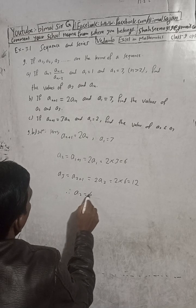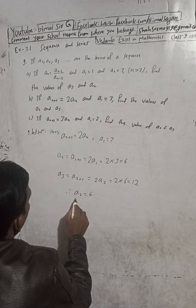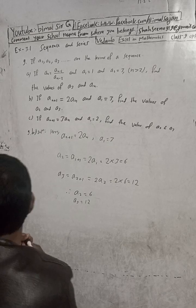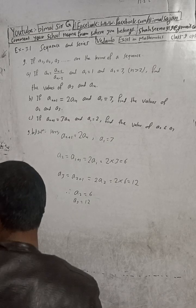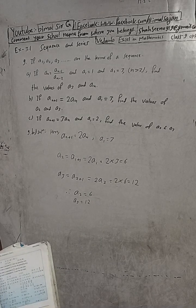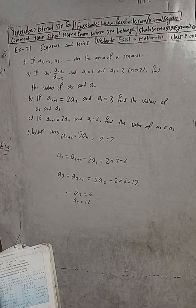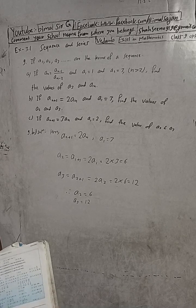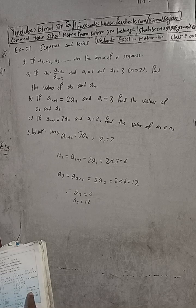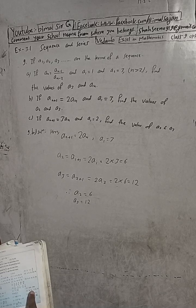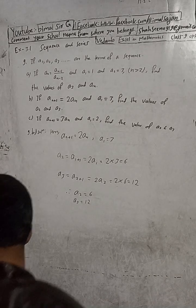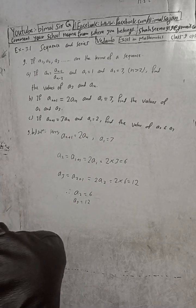So our answer for part B is: a2 is equal to 6 and a3 is equal to 12.